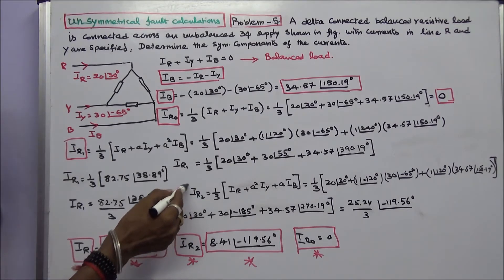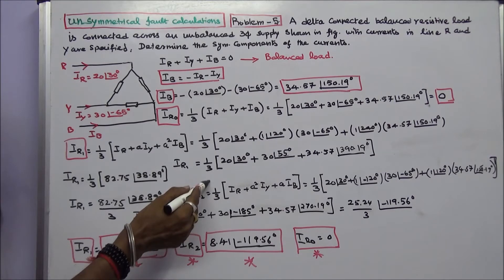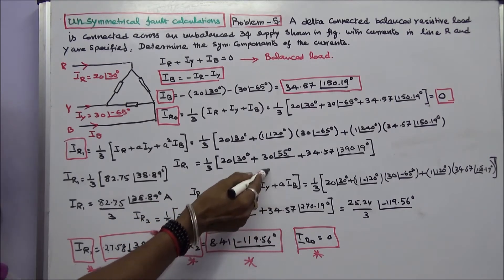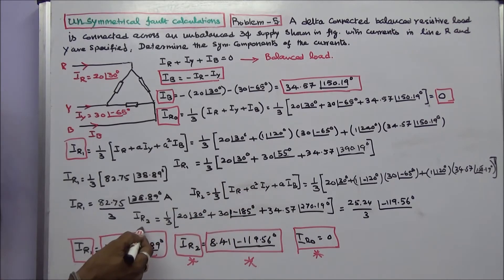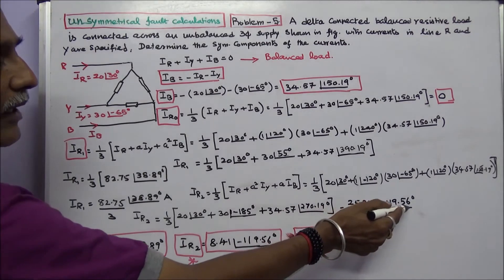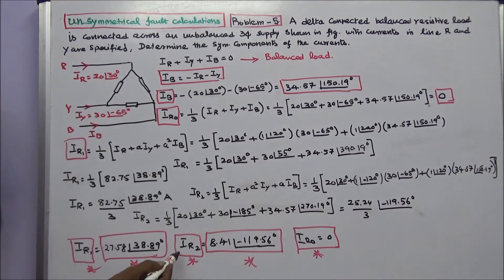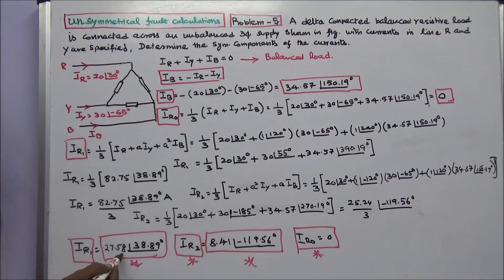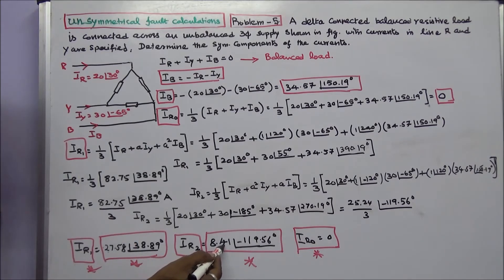Next is IR2. IR2 is equal to 1/3 into IR plus A²·IY plus A·IB. Substituting all values, IR2 is equal to 25.24 divided by 3 angle minus 119.56 degrees, therefore IR2 equals 8.41 angle minus 119.56 degrees. Summary: IR0 equals zero, IR1 equals 27.58 angle 38.89 degrees, IR2 equals 8.41 angle minus 119.56 degrees.